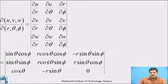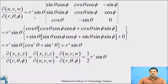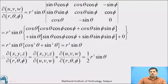After simplifying the determinant along the last row, we get R squared sin theta. Finally, the Jacobian of X, Y, Z with respect to R, theta, phi is the product of the two Jacobians: the first Jacobian is 1/4 and the second Jacobian is R squared sin theta. This product, R squared sin theta upon 4, is the required answer.